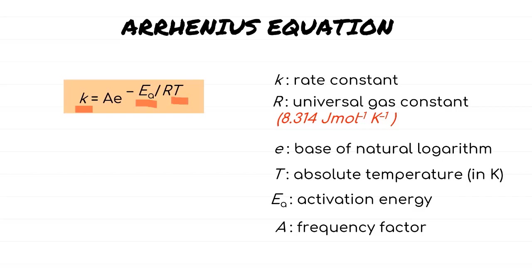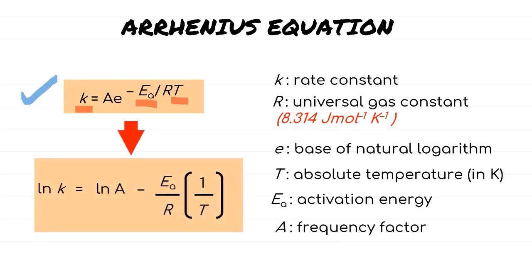One way is by using calculations with the direct formula. Another way is by using a graph. To make a graph, we rearrange the Arrhenius equation into the form y = mx + c by taking the natural logarithm of both sides, giving: ln k = ln A − (Ea/R)(1/T). So ln k is the y-axis, ln A is the y-intercept, 1/T is the x-axis, and −Ea/R is the gradient m.